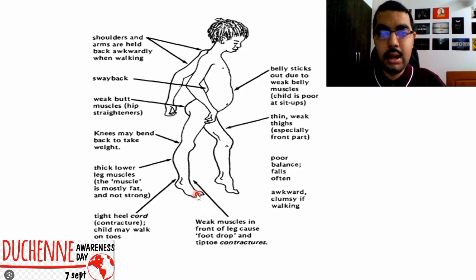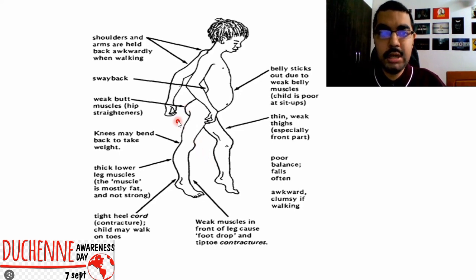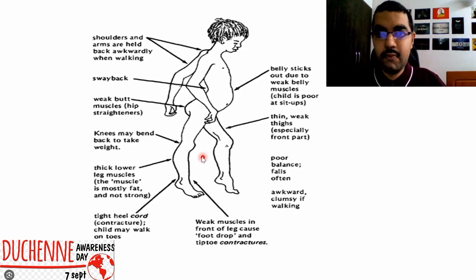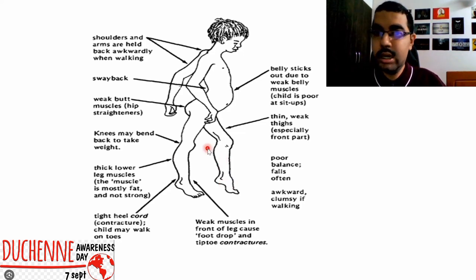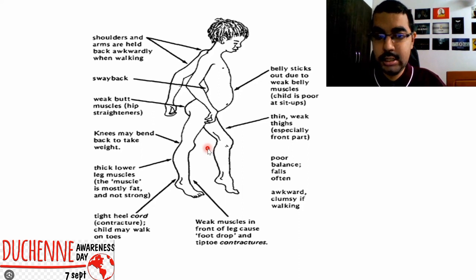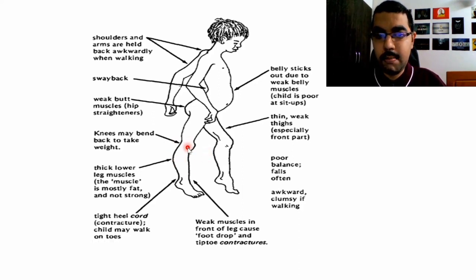Other features involve the buttocks — the hip muscles that straighten the hip, enabling people to stand and walk. When these become weak, children find it difficult to get up from a seated position. They may initially manage with support, but gradually even that becomes impossible. I will show a characteristic sign seen in DMD in the next slide. The knees may also bend back so the body is more supported.